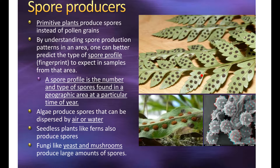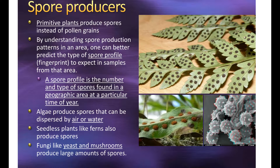Examples of spore producers include algae and certain types of ferns. If you flip a fern leaf over, you'll see little brown sacs — that's where spores are held until the plant disperses them. Algae produces spores that can be dispersed by both wind and water. Things like yeast and mushrooms, which are both fungi, also produce spores. Most spores are moved around by wind, whereas with pollen producers, much of the pollen gets moved around by animals.